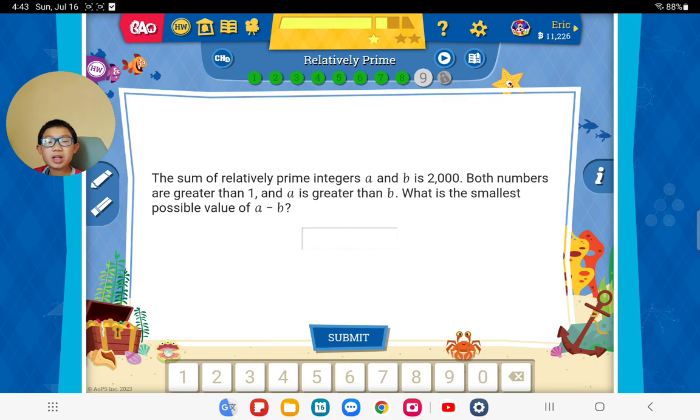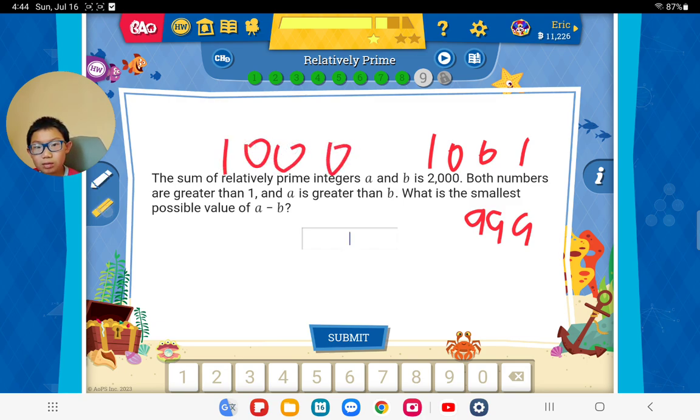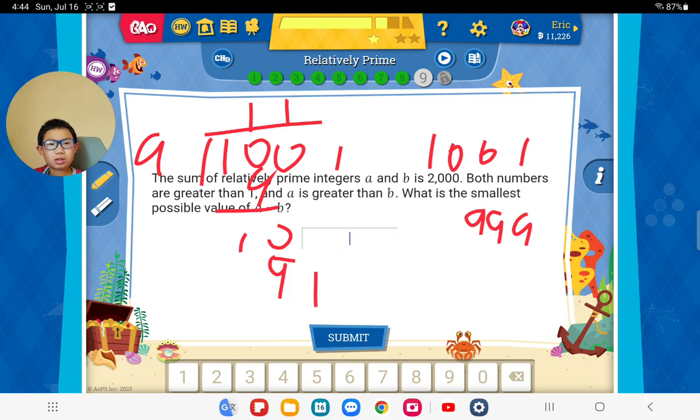Sum of relatively prime integers A and B is 2,000. Both numbers are greater than 1. And A is greater than B. What is the smallest possible value of A minus B? What means the smallest possible? So it means A and B should be very close. Yeah, to make them as small as possible. So I think this would be 1,000, 1,999. Wait a second, wait a second. Oh yeah. So is this the sum of the relative number? Do they have the same? Seems this is the correct answer. Wait a second, let me check. It's 1,000, 1,000, 1,900. Seems this is the correct answer. Yes.